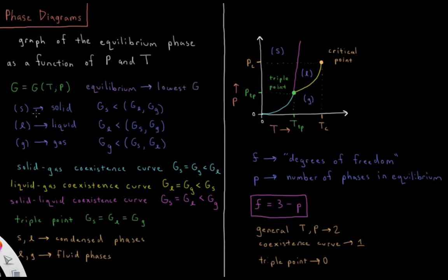Examples of the phases are things that we're all familiar with. When a solid exists, the Gibbs energy of the solid is lower than the Gibbs energy of a liquid, gas, and whatever other phases there are. There can be multiple solid phases and multiple liquid phases, but in the most simple case there will just be three.